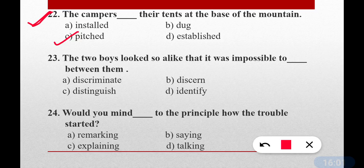Question number twenty-three: The two boys looked so alike that it was impossible to dash between them. You can easily understand — it is impossible to distinguish between them. Option C is correct — distinguish. Both boys look so similar that distinguishing between them is difficult.